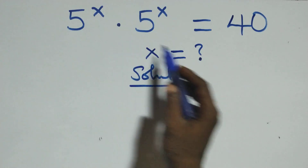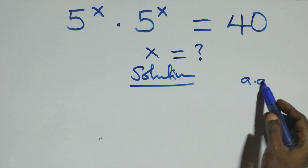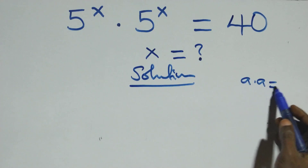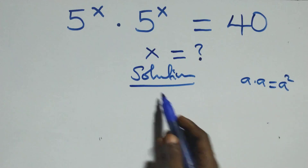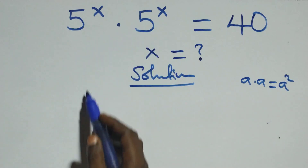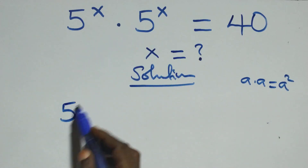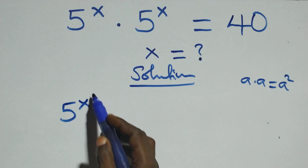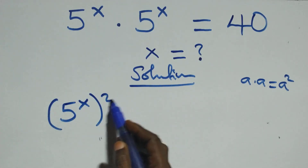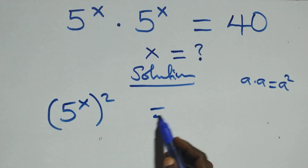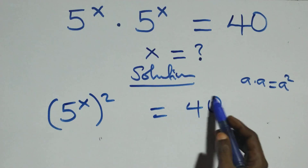What we have here: this follows when we have a times a, which is the same thing as a squared. Applying the same multiplying rule, we write this as 5 raised to power x, squared, equals 40.